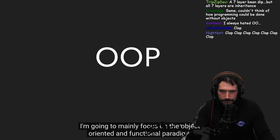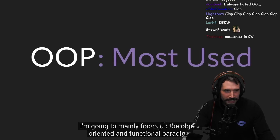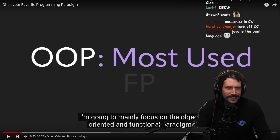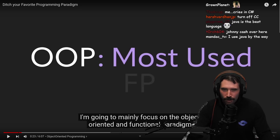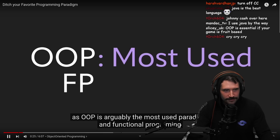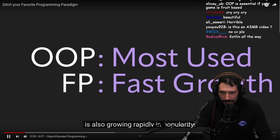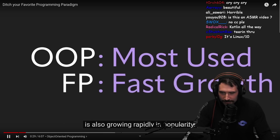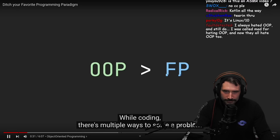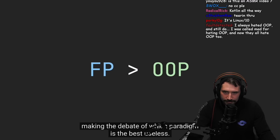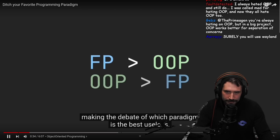I realized constricting myself to one paradigm wasn't a smart decision, and expanding my options could greatly increase my coding quality. I'm going to mainly focus on the object-oriented and functional paradigm. OOP is arguably the most used paradigm, and functional programming is also growing rapidly in popularity. While coding, there are multiple ways to solve a problem, making the debate of which paradigm is the best useless.